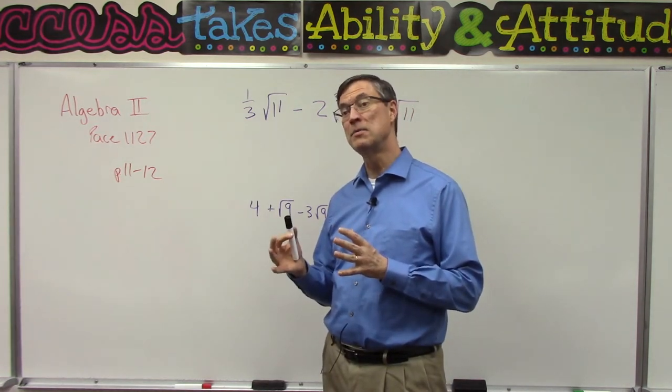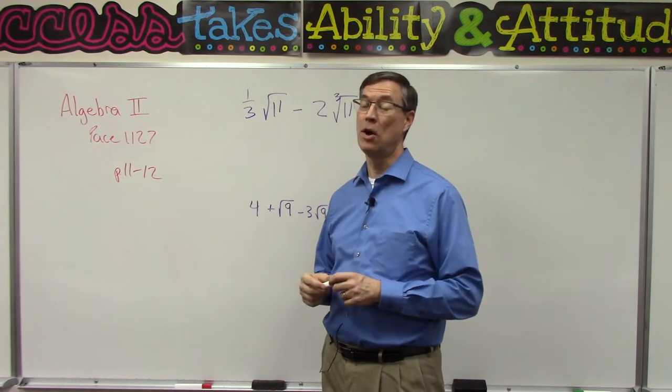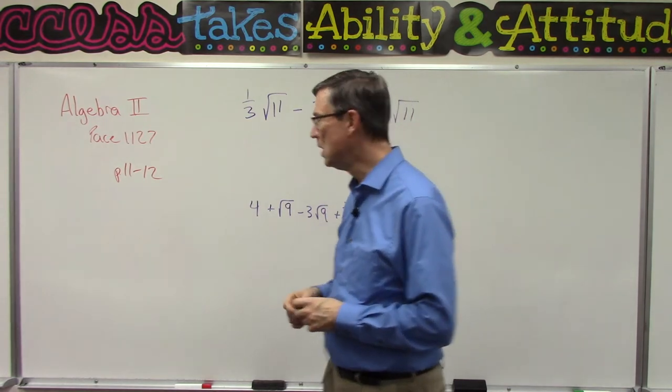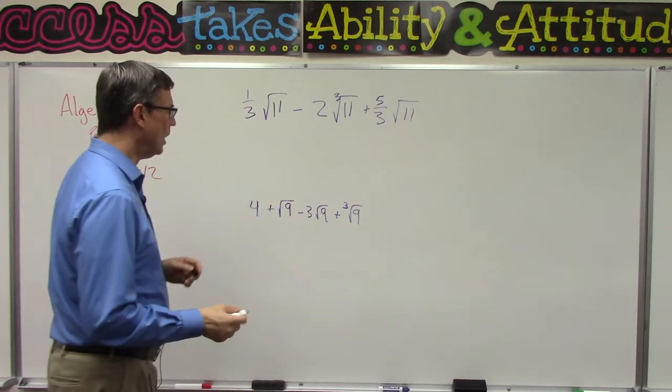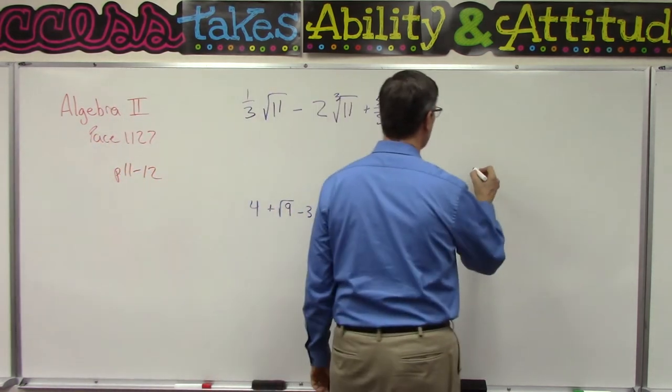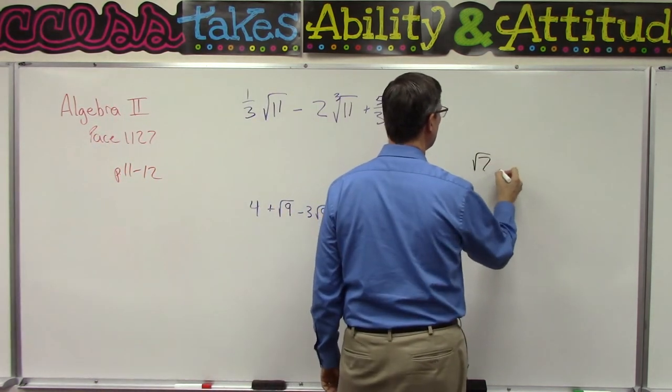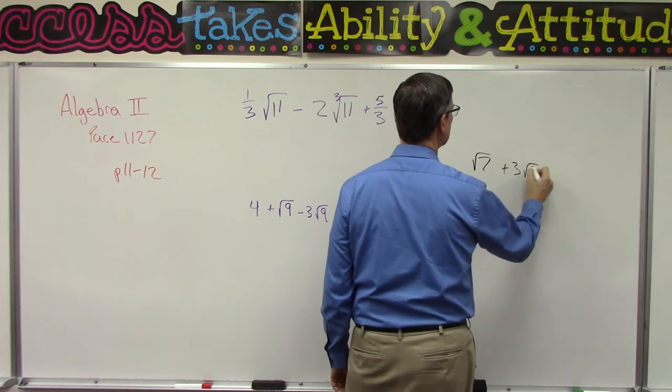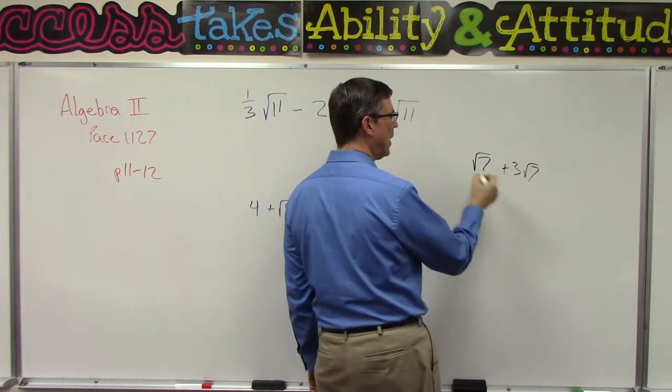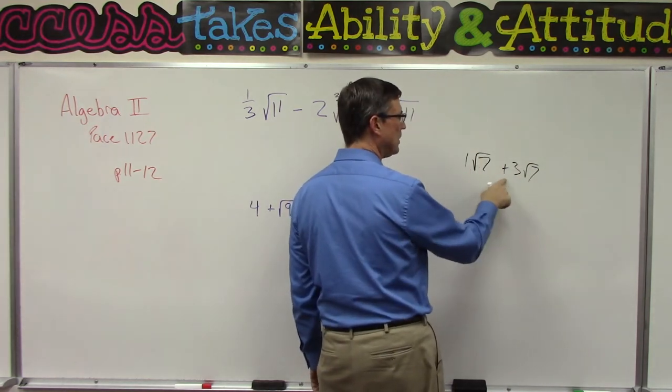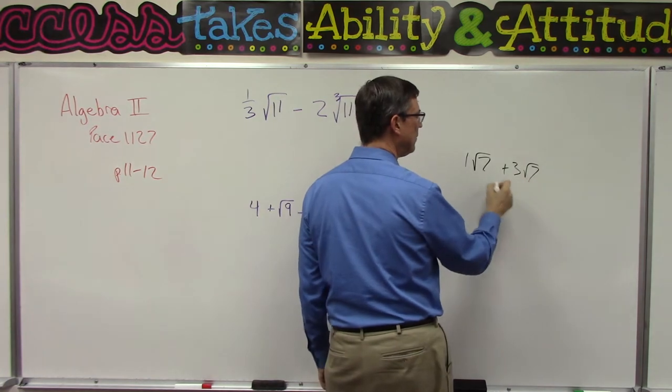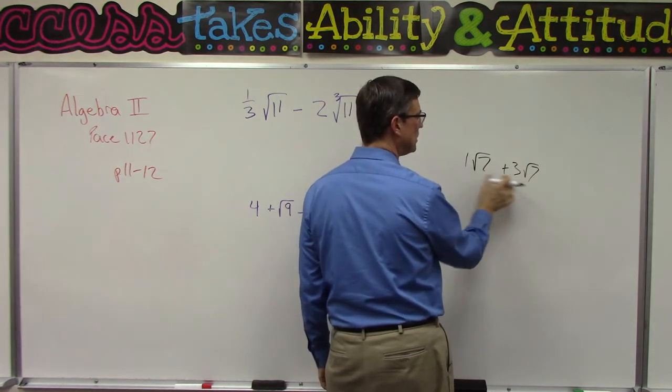A lot of times there's nothing that are like terms that you can add together. So for instance, if I had square root of seven plus three square root of seven, you can actually add that. It's like having one square root of seven plus three. They're the same thing, these two terms are the same, so we can say four square root of seven.